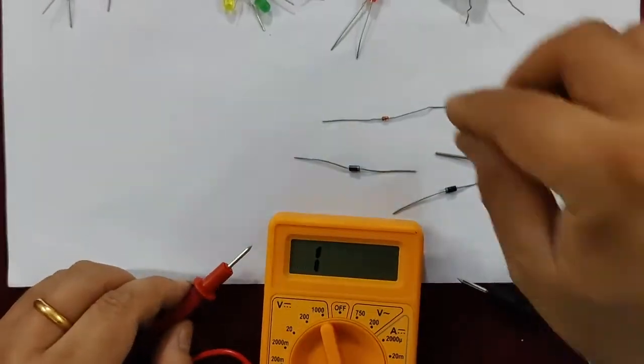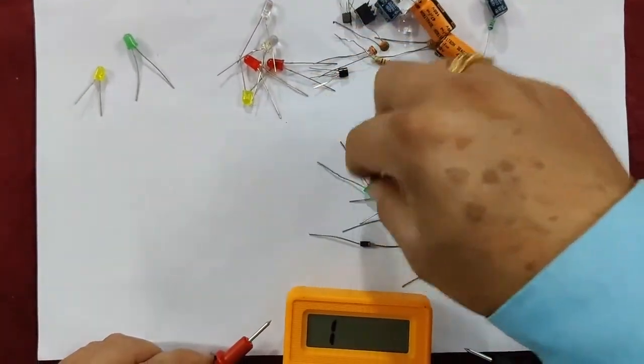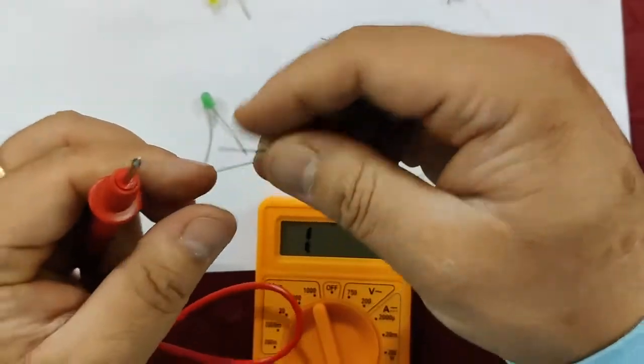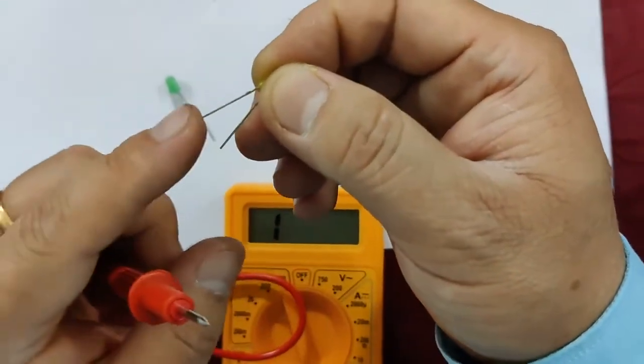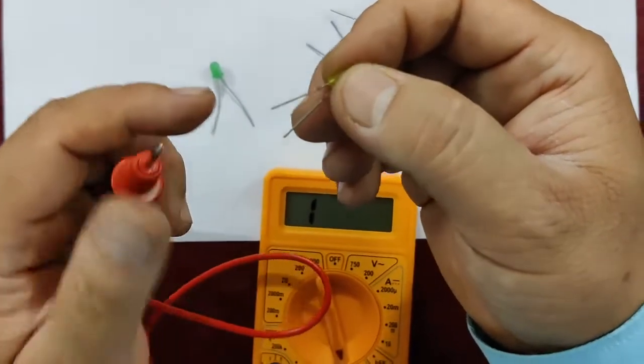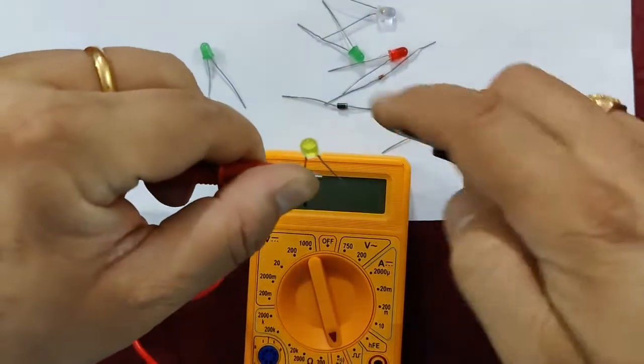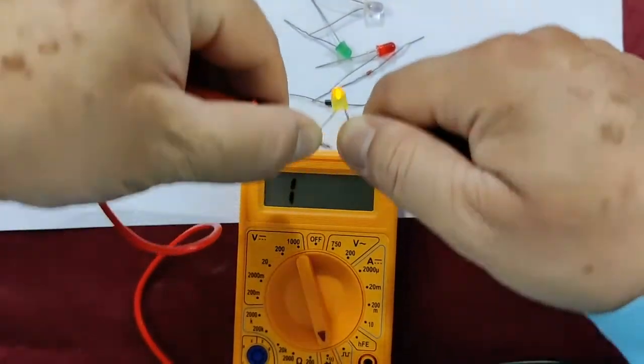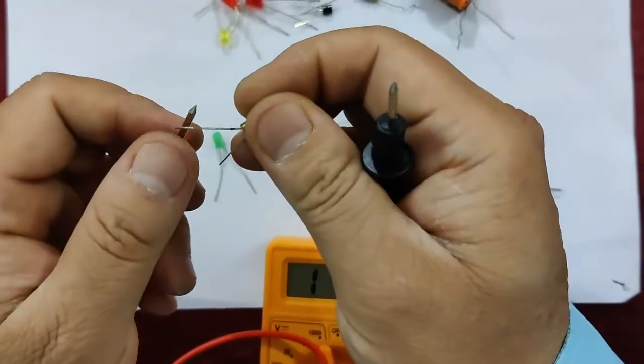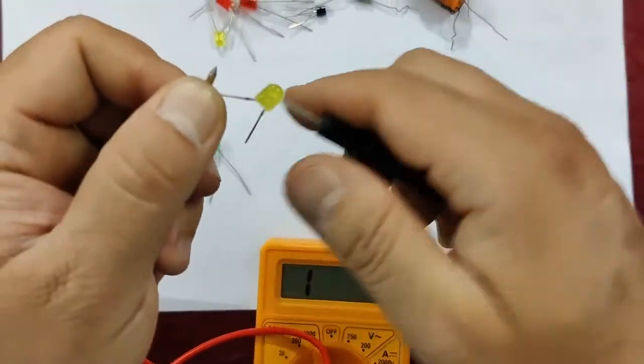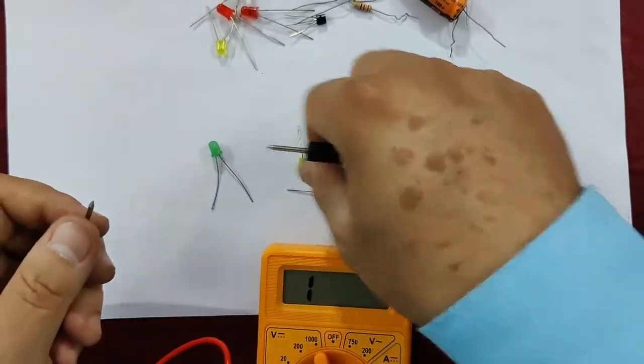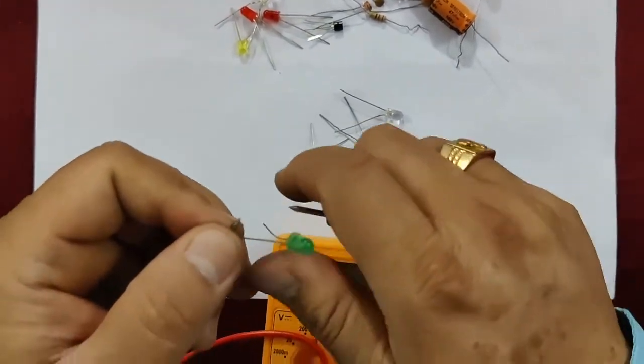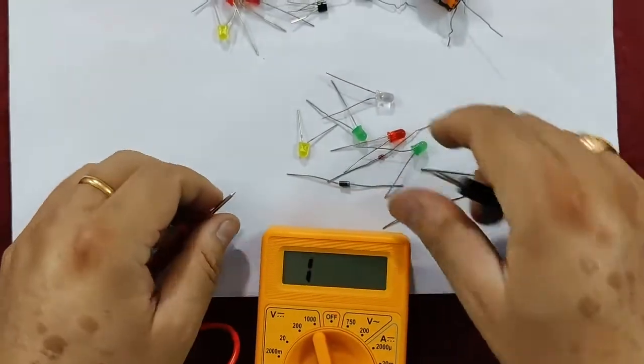Then we have LEDs, light emitting diodes. Green color, transparent color and yellow. You can check the leg terminals, one shorter length stands for negative and longer stands for positive. So you touch it negative to positive. Now it glows, means this long terminal is positive and small terminal is negative. Now check the green color LED, it will turn on.